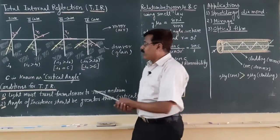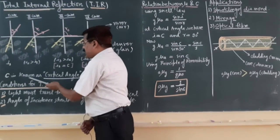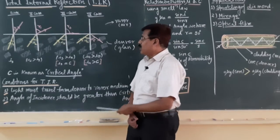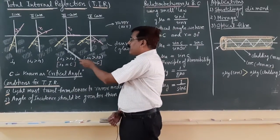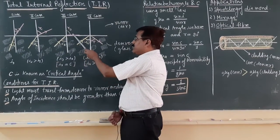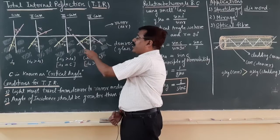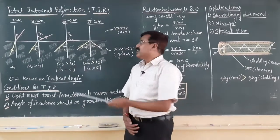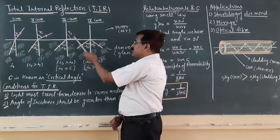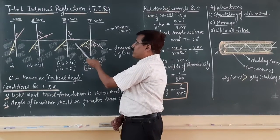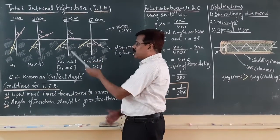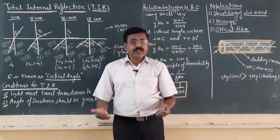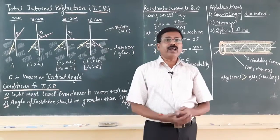What is the concept of critical angle? C stands for critical angle in our discussion. The critical angle is the angle of incidence at which the angle of refraction becomes 90 degrees, that is, the refracted ray coincides with the boundary of the two media. This is the critical situation or critical angle.